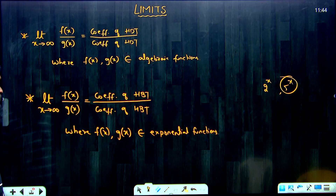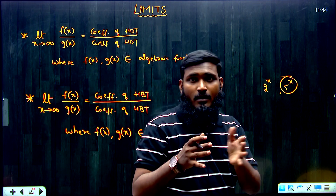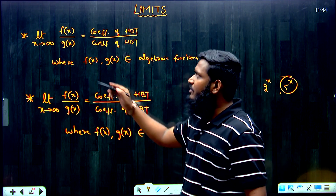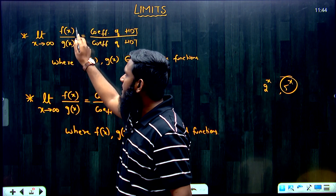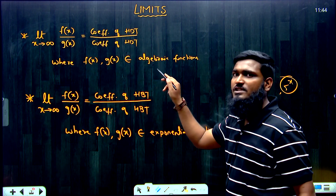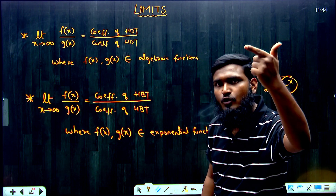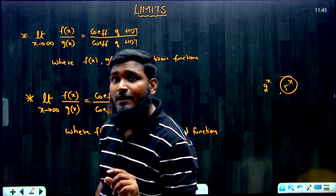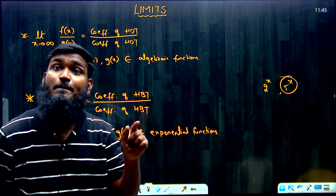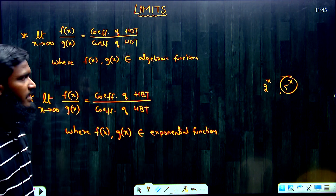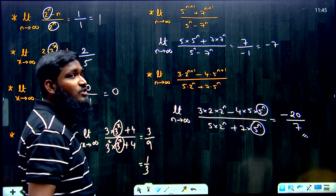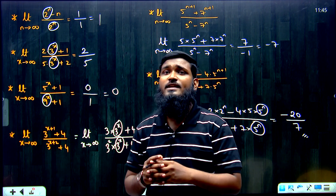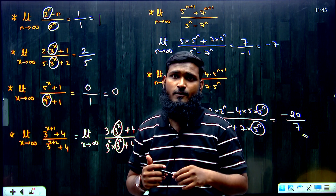This was the shortcut related to today's video. In our last video and this video, we discussed one excellent shortcut: whenever limit x tends to infinity f(x)/g(x) with algebraic functions, select coefficient of highest degree term; with exponential functions, select coefficient of highest base term. Hope you enjoyed this video. Please share it with your friends and in your WhatsApp group. Thank you very much.